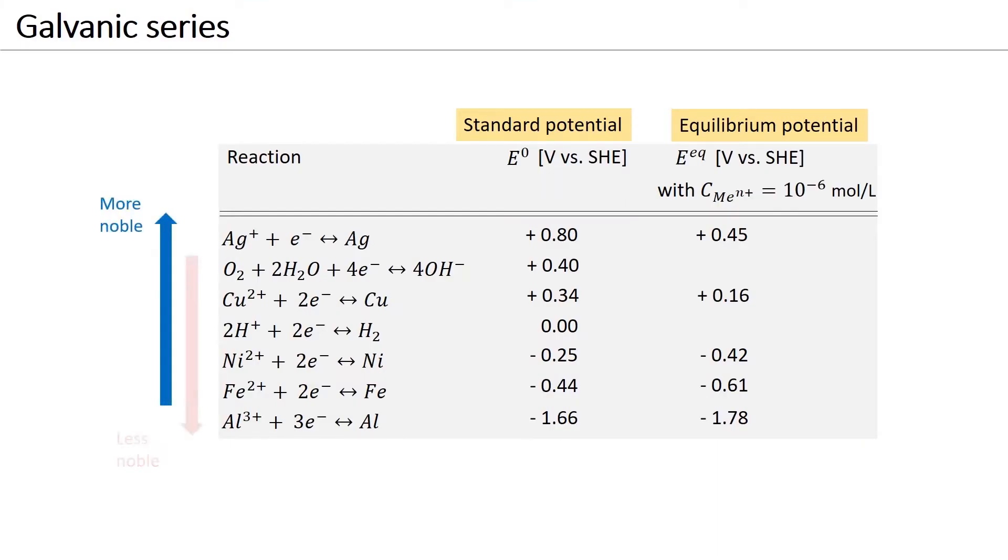Positive potentials typically mean noble reactions. In corrosion systems, often two or more electrochemical reactions are possible, leading to galvanic interaction. The reaction with a less noble equilibrium potential will act as the anodic reaction, releasing electrons, and the reaction with more noble equilibrium potential will act as the cathodic reaction, consuming the electrons.